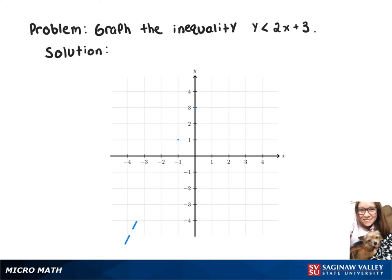And then we're going to do a dashed line, since it's strictly less than. And then because it's less than, we're going to color in everything below the line.